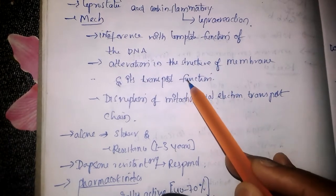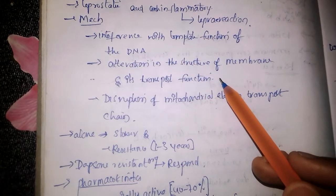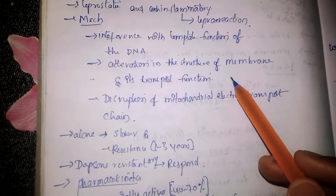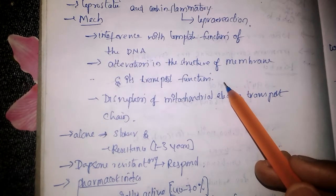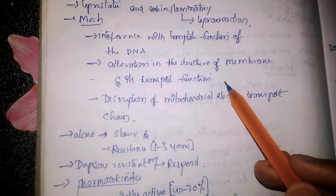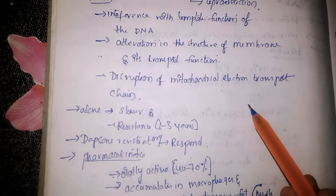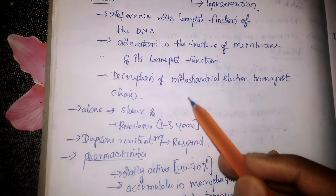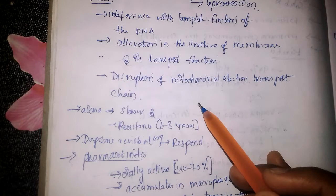The second mechanism is that it alters the structure of the membrane, leading to alteration in the transport function. The third mechanism is that it disturbs the mitochondrial electron transport chain. These are the three important mechanisms by which Clofazimine acts.